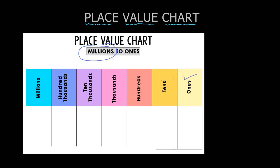Here we have the ones place, tens place, hundreds place, thousands place, ten thousand, hundred thousand and million.